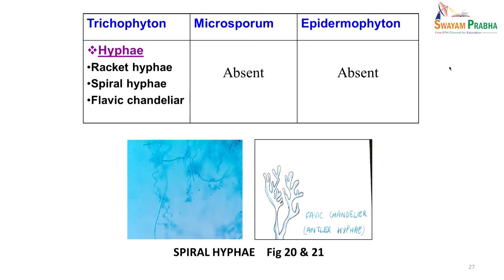It is important to diagnose the species because different species have different sensitivity to antifungal agents, and we need to know how long treatment will take. Trichophyton rubrum is the notorious species known to take a long time to treat and is resistant to many antifungal agents. That is why it is important to identify the fungus for long-term patient management.